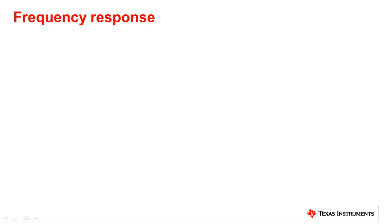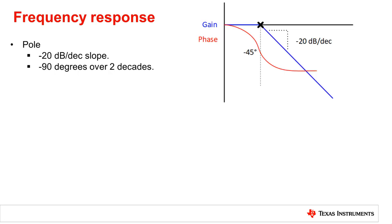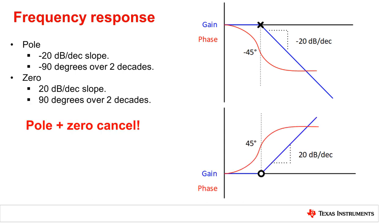I will briefly review some of the frequency response topics. A pole affects the frequency response by having the gain go down by 20 dB per decade and will have a 90 degree phase shift over two decades. A zero does the exact opposite where the gain will increase by 20 dB per decade and will have the phase shift 90 degrees positive over two decades. Something very important is that when a pole and zero are in the same location they cancel.